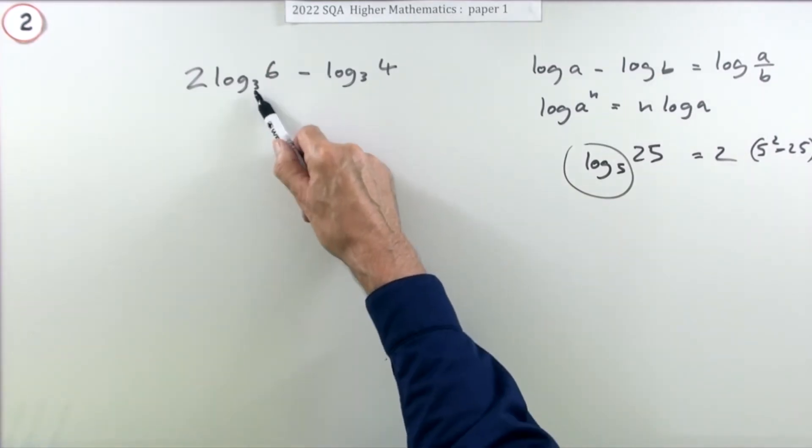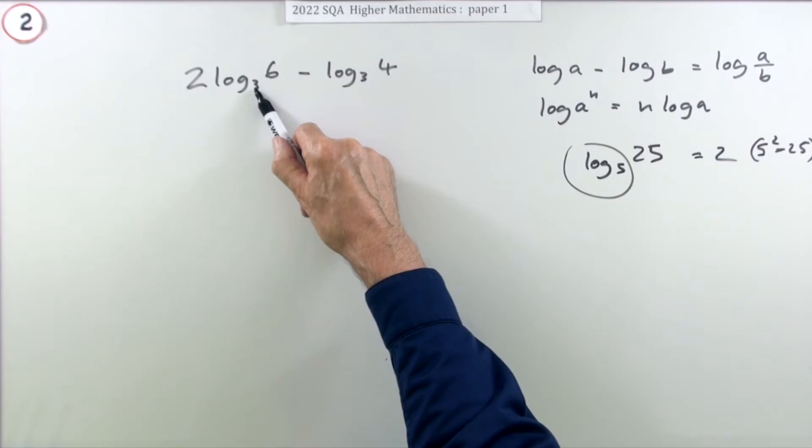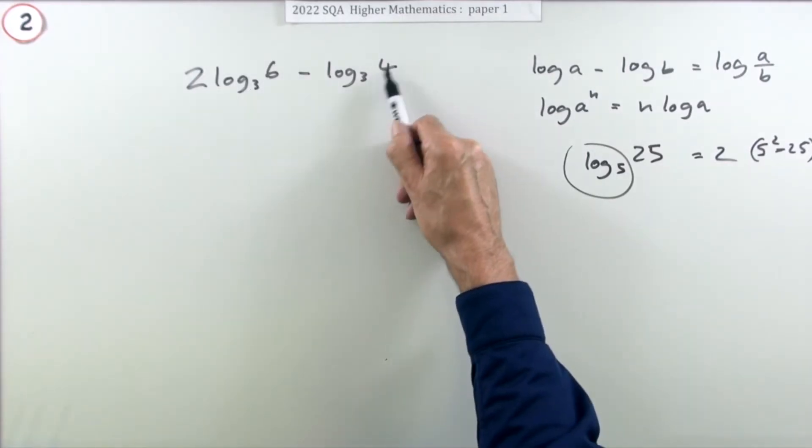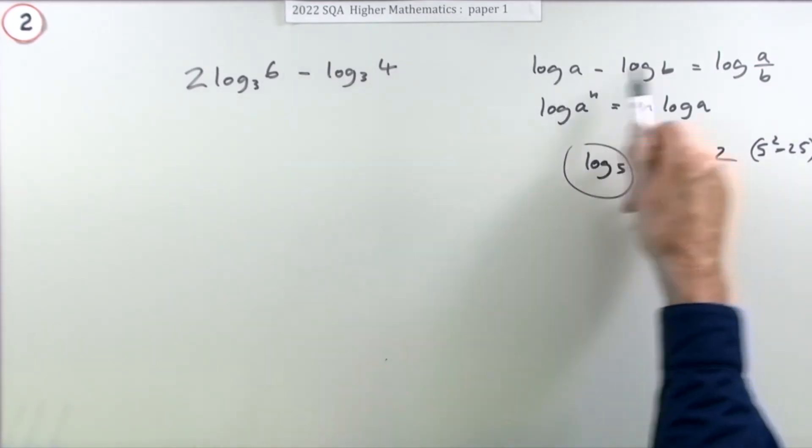So the last thing you'd be using is the fact that the logarithm is asking you for what power you've got. Well, here I don't know the answers because they're not nice. 6 isn't a power of 3 - well it is a power of 3 but it's not a nice one, it's not a rational one - and 4 is not a power of 3. So I can't work them out straight away, so I'll have to use these to try and tidy up, and hopefully my final answer will be a recognizable power of 3.